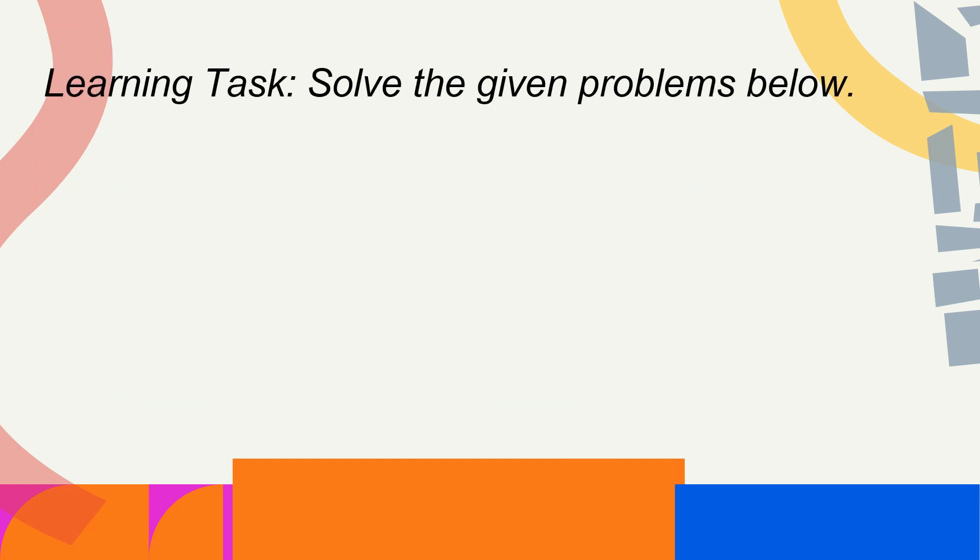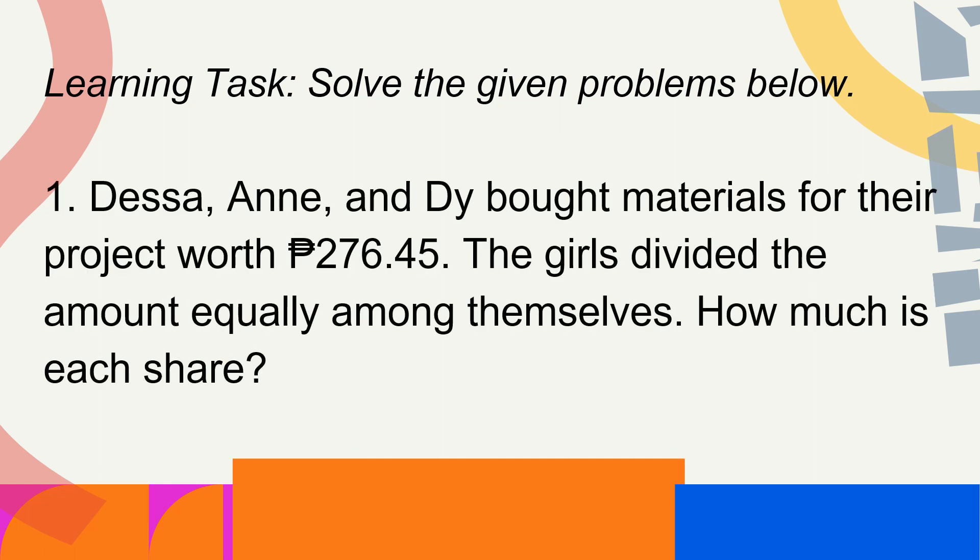From the learning task, solve the given problems below. Problem number 1: Desa, Ann, and Dee — the materials for their project cost 276 pesos and 45 centavos. The girls divided the amount equally among themselves. How much is each share? There are three girls — Desa, Ann, and Dee — who divided the project cost worth 276 pesos and 45 centavos.